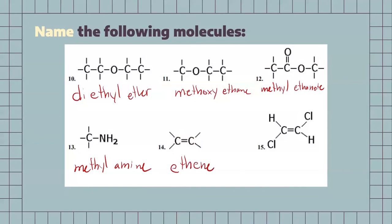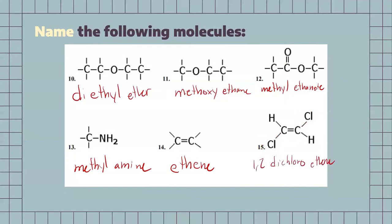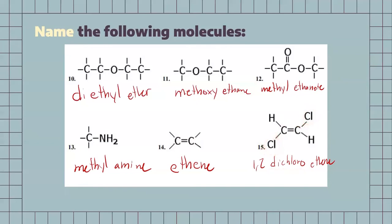For our next one, we have an alkene, but we also have two halogens attached to those carbons. So, properly naming it, it would be 1,2 — for the 1 and 2 where the halogens are going to be — dichloro, since we have two chloride ions on there, and ethene for our ethene group in the center.